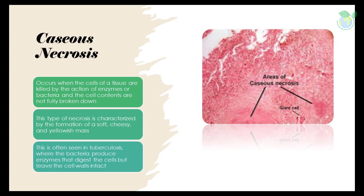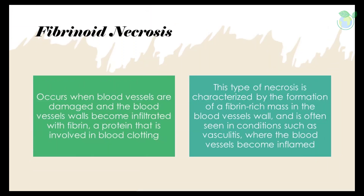Caseous necrosis: a third type of necrosis is caseous necrosis, which occurs when the cells of a tissue are killed by the action of enzymes or bacteria and the cell contents are not fully broken down. This type is characterized by the formation of a soft, cheesy, and yellowish mass. This is often seen in tuberculosis, where the bacteria produce enzymes that digest the cells but leave the cell walls intact.